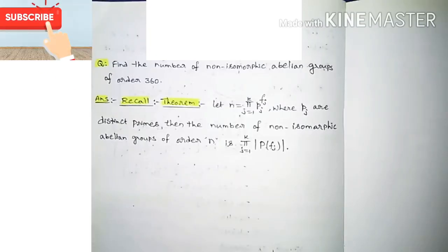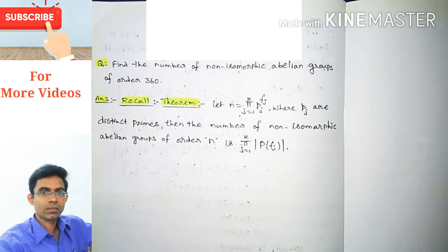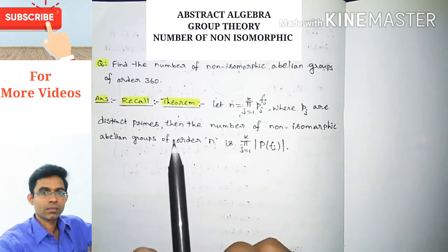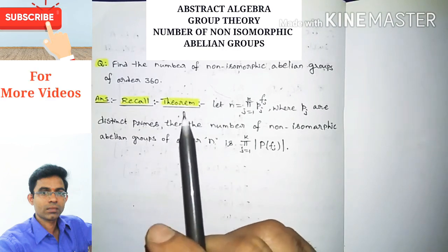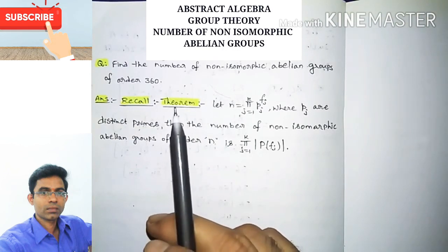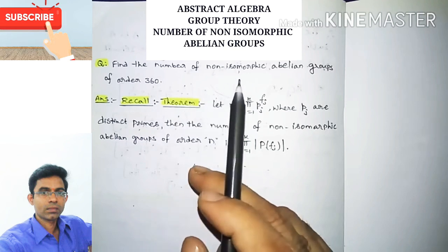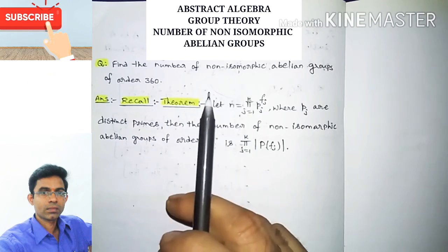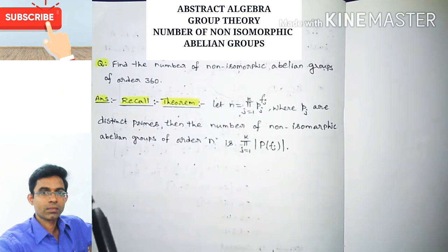Hi everyone, this is Ram Krishna, welcome to my channel. In this video I'm going to discuss abstract algebra group theory. In this section we will discuss how to find the number of non-isomorphic abelian groups of given order.